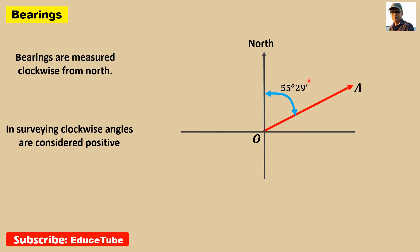So we can say OA has a bearing 55 degrees 29 minutes. If I check another line, say OB, what is its bearing? 105 degrees 25 minutes. Because from the reference direction north, I took these angles 105 degrees 25 minutes clockwise.